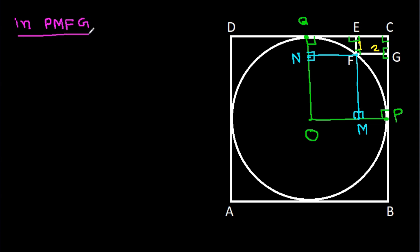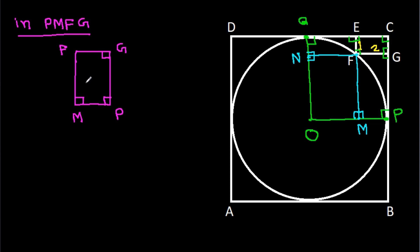In quadrilateral PMFG, three angles are each 90 degrees, so the fourth angle is also 90 degrees. That means PMFG is a rectangle. Therefore FG equals PM equals 2, so PM is 2.